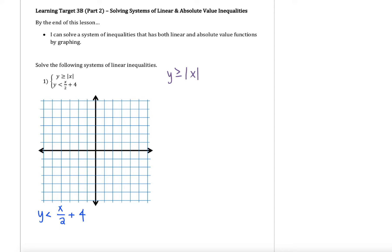So we have to identify what these graphs are going to look like. Pause the video right now and determine for both of these inequalities in our system if the shape of the graph will be a straight line or a v-shaped graph, if the line will be solid or dotted, and then if we'll have to shade or not.